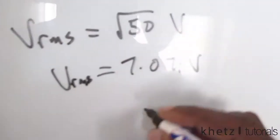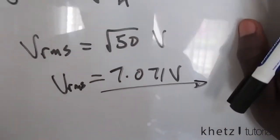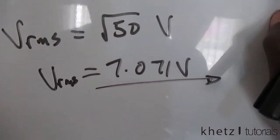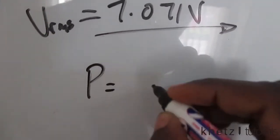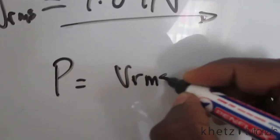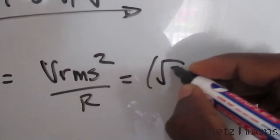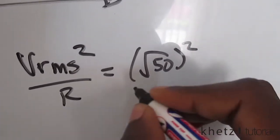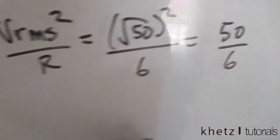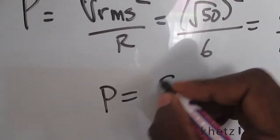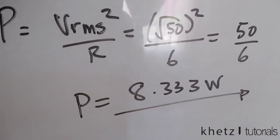We can now proceed to find the power dissipated in a 6 ohm resistor. The average power is given by the formula Vrms squared divided by R, which equals square root of 50 squared divided by 6, which equals 50 divided by 6, and the answer is 8.333 watts.